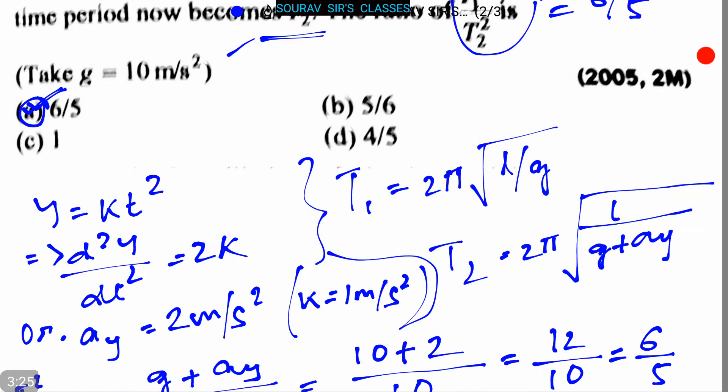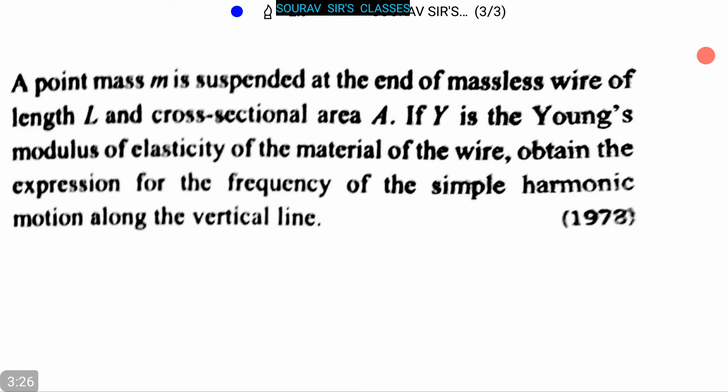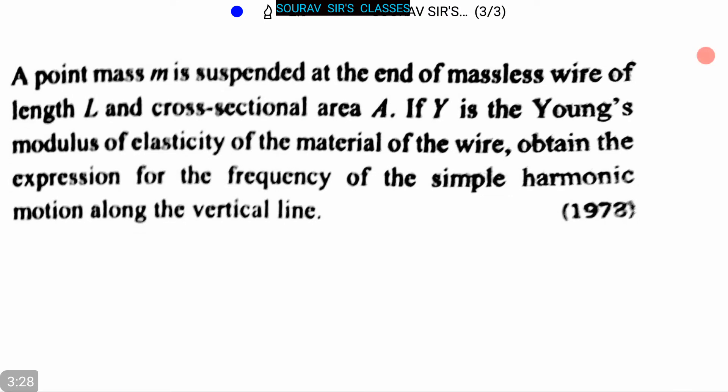The next question is: A point mass m is suspended at the end of a massless wire of length L and cross-sectional area A. If Y is the Young's modulus of elasticity of the material of the wire, obtain the expression for the frequency of the simple harmonic motion along the vertical line.